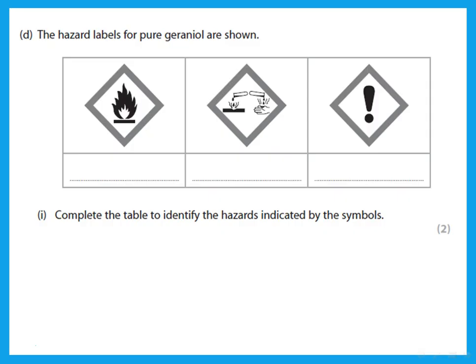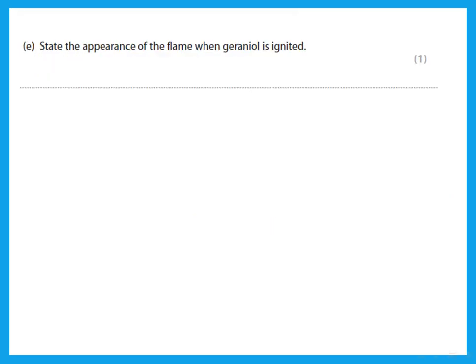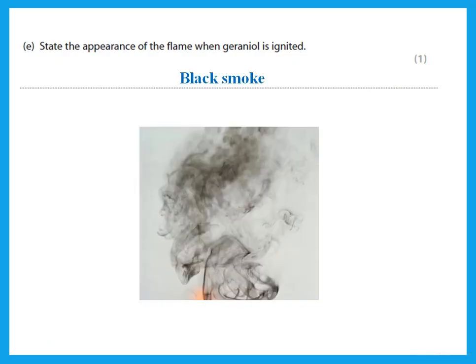The hazard labels for pure geraniol are shown. Complete the table to identify the hazard. The first one means flammable, the second one is corrosive, and that one means it is irritant or harmful. State one precaution other than wearing safety spectacles and laboratory coat that should be taken when using pure geraniol. Because it is corrosive, I should wear gloves. State the appearance of the flame when geraniol is ignited. Geraniol is an organic compound—when you burn an organic compound, you get black smoke.